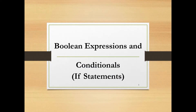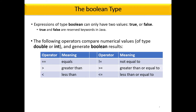Boolean expressions and conditionals, or if statements. The Boolean type: expressions of type Boolean can only have two values, true or false. True and false are reserved keywords in Java, which means these words can't be used as your identifier or variable name. The following operators compare numerical values of type double or int and generate Boolean results.